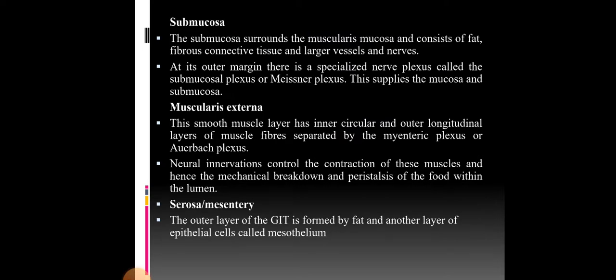The next layer is the submucosa, which surrounds the muscularis mucosa and consists of fat, fibrous connective tissue, and larger vessels and nerves. At its outer margin there is a specialized nerve plexus called the submucosal plexus or Meissner's plexus, which supplies the mucosa and submucosa. The next layer is the muscularis externa, a smooth muscle layer that has inner circular and outer longitudinal layers of muscle fibers, separated by the myenteric plexus or Auerbach's plexus. The neural innervations control the contraction of these muscles and hence the mechanical breakdown and peristalsis of food within the lumen.